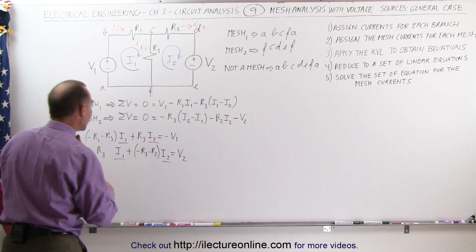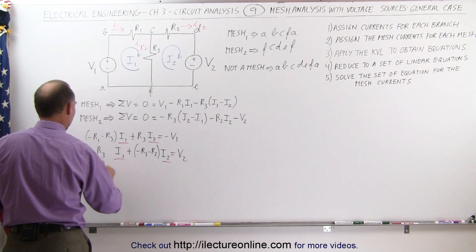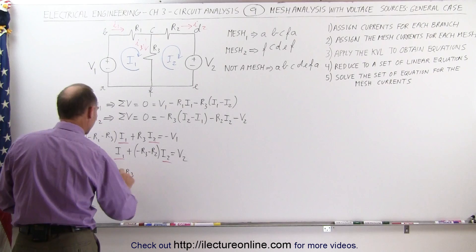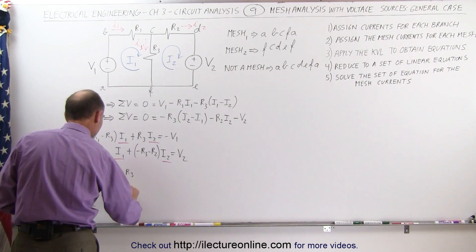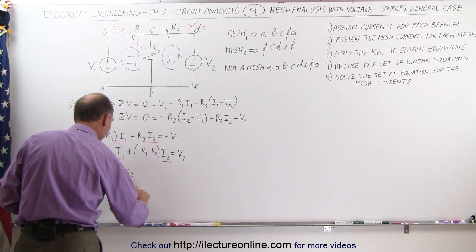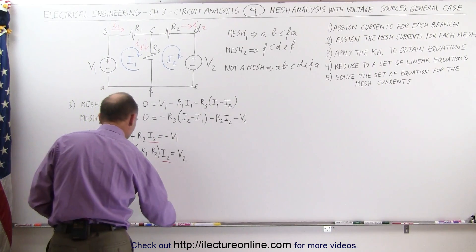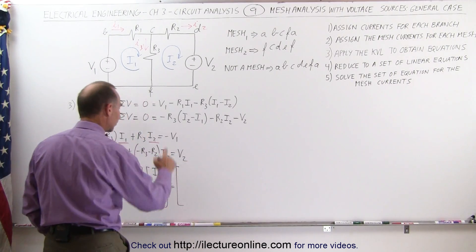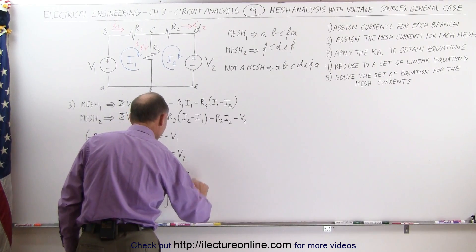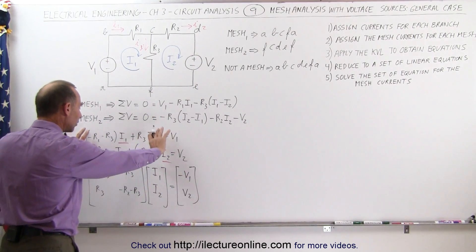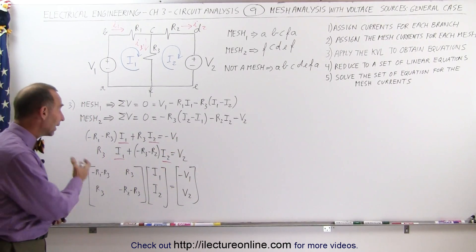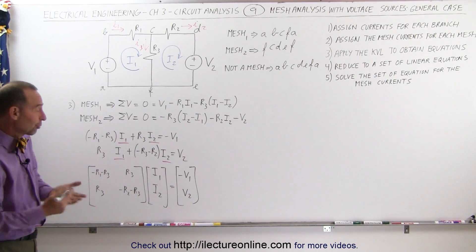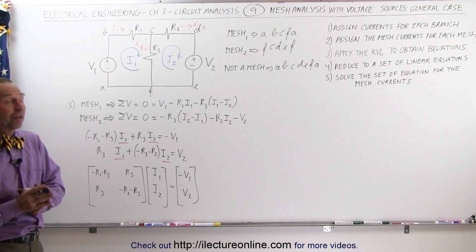We can rewrite this in matrix format: the coefficient matrix has minus (R1 + R3) and R3 in the first row, and R3 and minus (R2 + R3) in the second row, multiplied by the column vector [I1, I2], equaling the constants [minus V1, positive V2]. You can then solve this using algebraic methods, matrices, determinants, or Cramer's rule, and we'll show examples of how to do that.